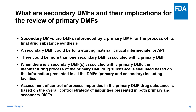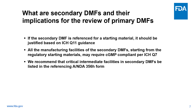Also, the assessment of control of process impurities in the primary DMF drug substance is based on the overall control strategy of impurities present in both primary and secondary DMFs. If the secondary DMF is referenced for a starting material, it should be justified based on ICH Q11 guidance. And all the manufacturing facilities of the secondary DMFs starting from the regulatory starting materials may require CGMP compliance per ICH Q7.